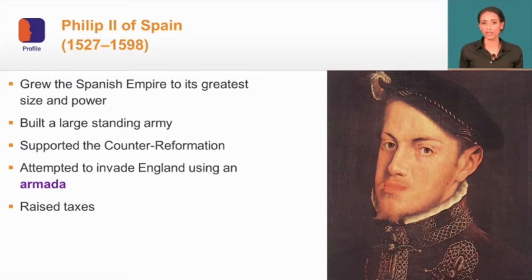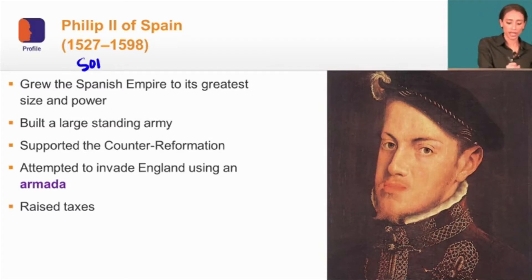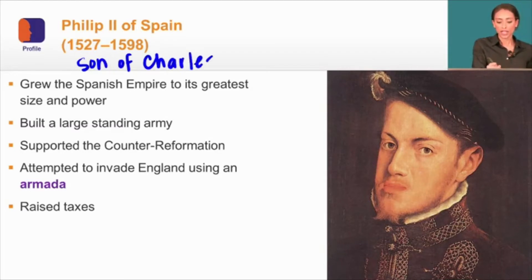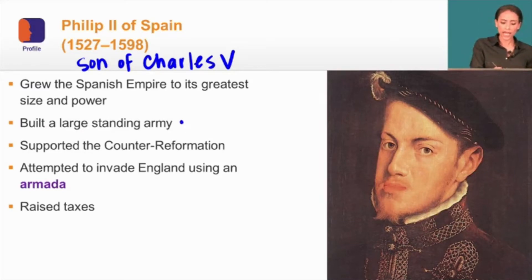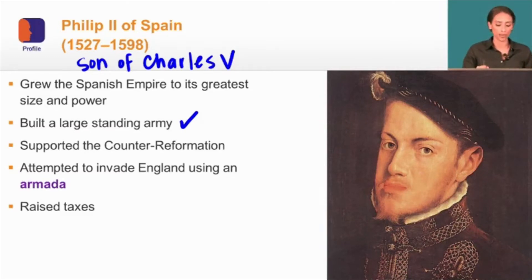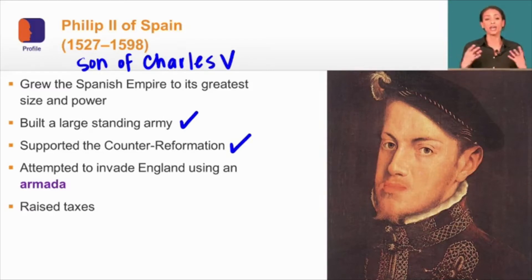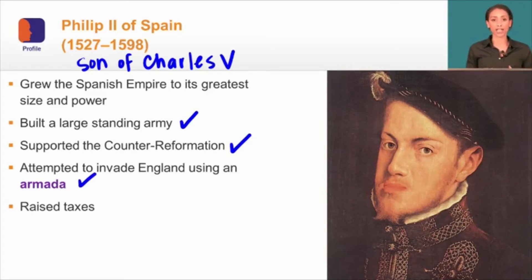As early as 1527, Philip II of Spain is one of our earliest examples of absolute rulers in this time. He is the son of Charles V, the Holy Roman Emperor, who had clashed with the Lutherans in Germany. Philip took his father's lead and grew the Spanish Empire to its greatest size and power by enacting four key principles: he built a large standing army — one of the first times kings built a permanent army; he supported the Counter Reformation, trying to impose the Catholic religion on Spain and neighboring countries; and he even attempted to invade England using a Spanish armada, which was ultimately unsuccessful.